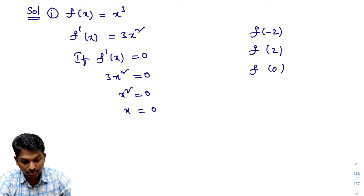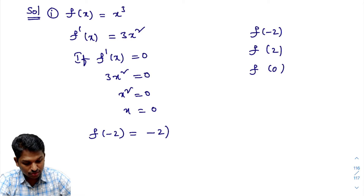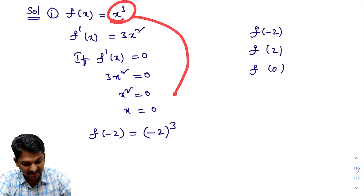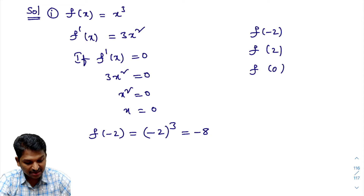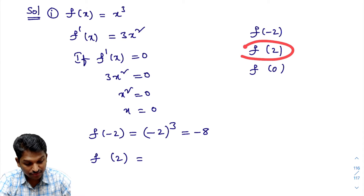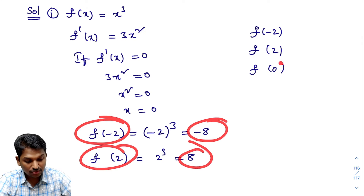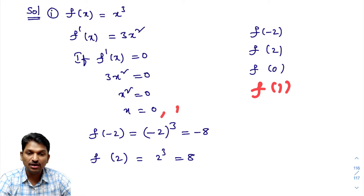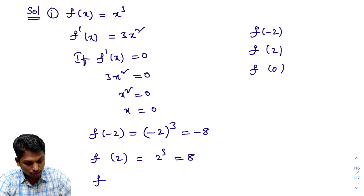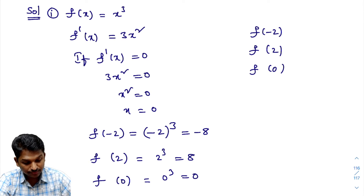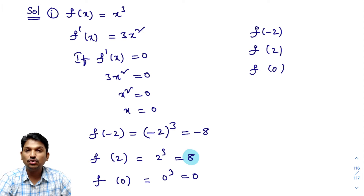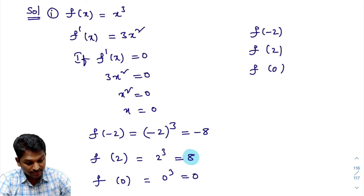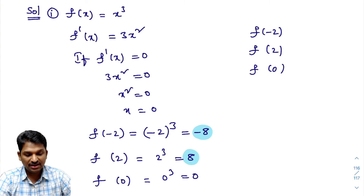f(-2) = (-2)³ = -8. f(2) = 2³ = 8. f(0) = 0³ = 0. Observing these values, 8 is the highest — so the absolute maximum value is 8 at x = 2. The least value is -8 — so the absolute minimum value is -8 at x = -2.